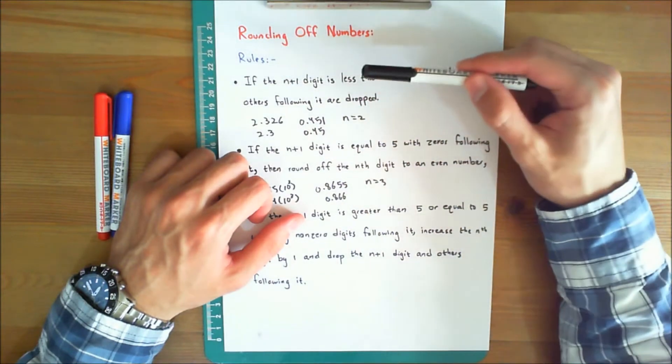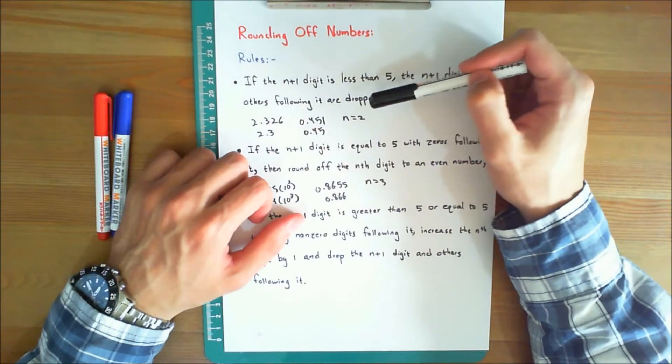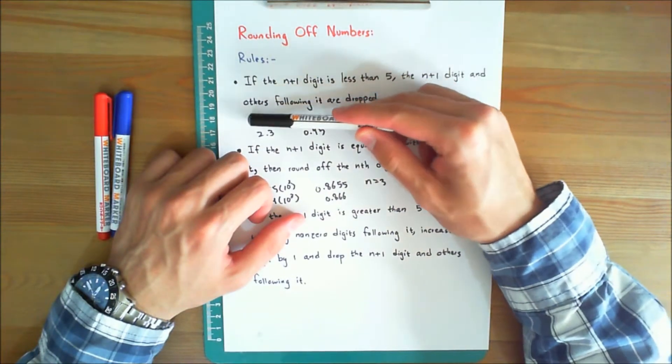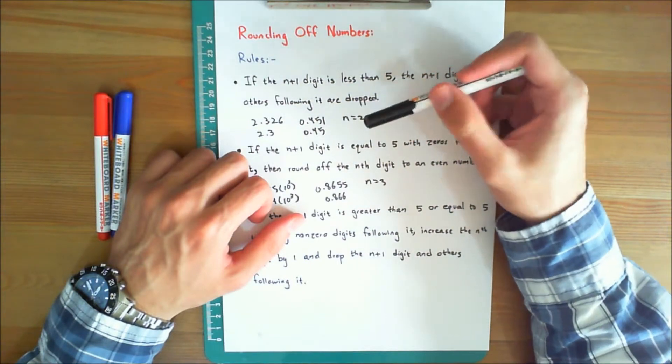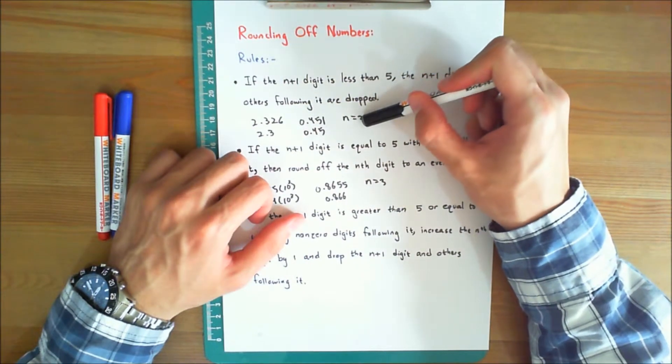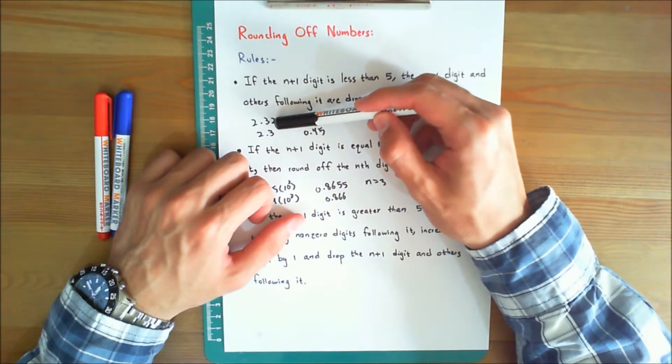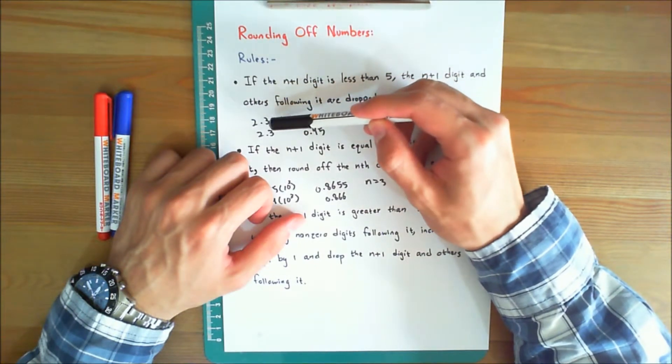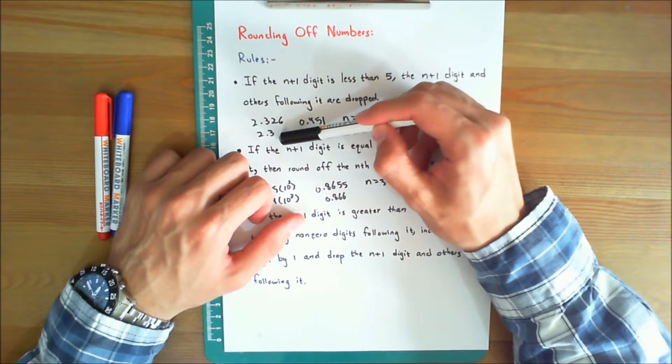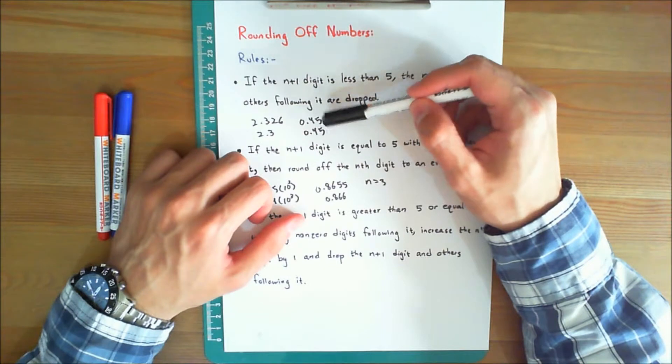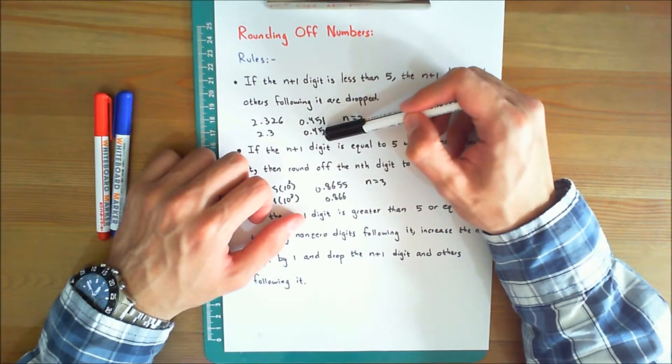If the n plus 1 digit is less than 5, then the n plus 1 digit and others following it are dropped. For example, 2.326 and 0.451 rounded off to n equals 2 significant figures would give you 2.3, since 2 is less than 5, and 2 and all the numbers following it are dropped. 0.451 would give you 0.45, which is 2 significant figures.